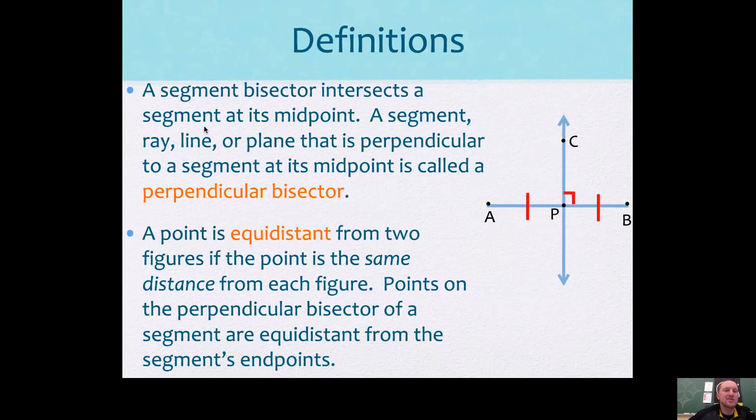A segment bisector intersects a segment at its midpoint. A segment, ray, line, or plane that is perpendicular to a segment at its midpoint is called a perpendicular bisector. So this line right here, it could appear as a line or part of a line, like a segment or a ray. This line is a perpendicular bisector because it crosses this segment at a right angle, and it touches the segment at its midpoint, and you know it's a midpoint because of those marks.